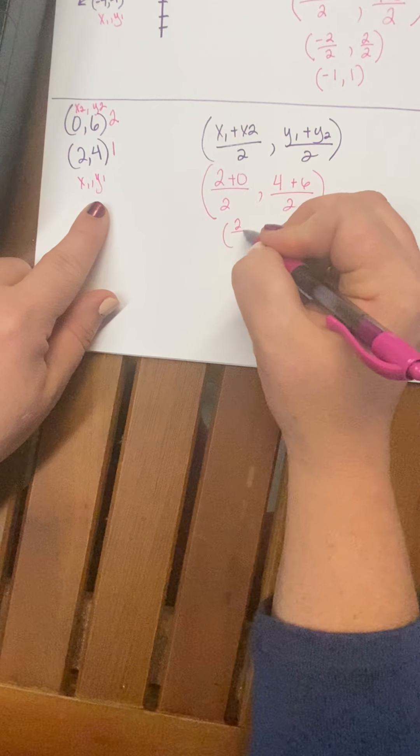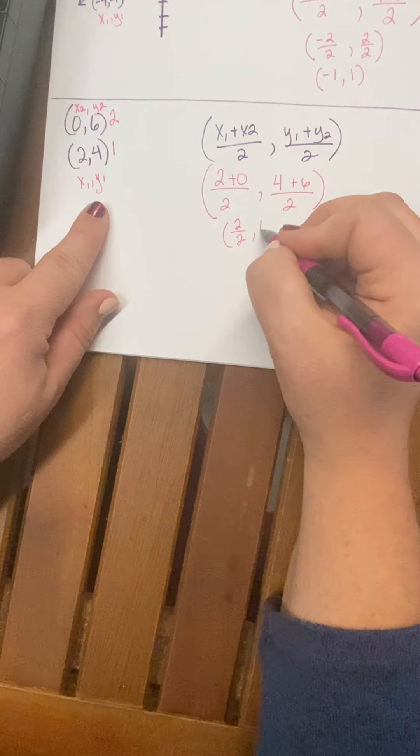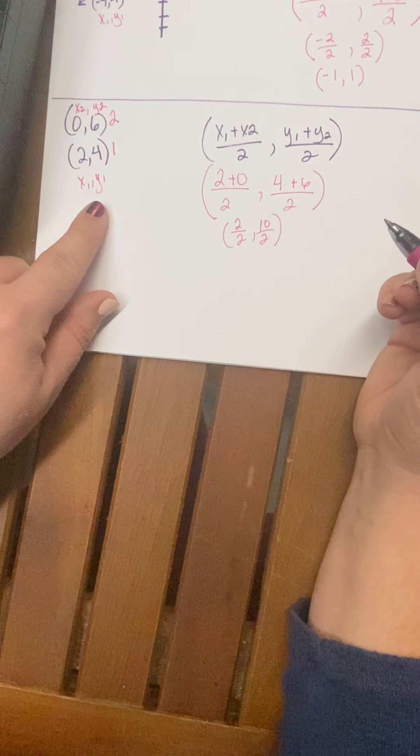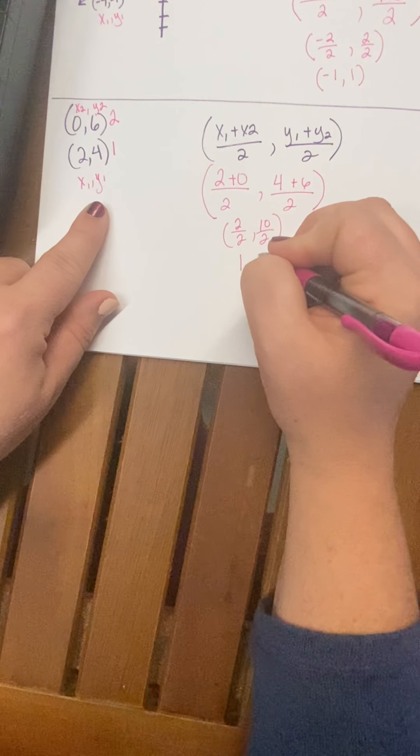So we have 2 over 2, and 10 over 2, which will simplify to 1, 5.